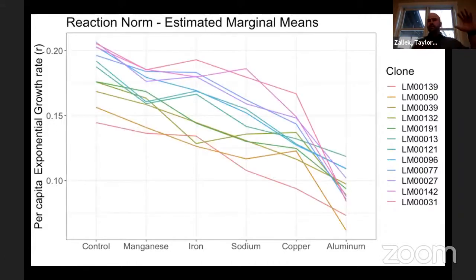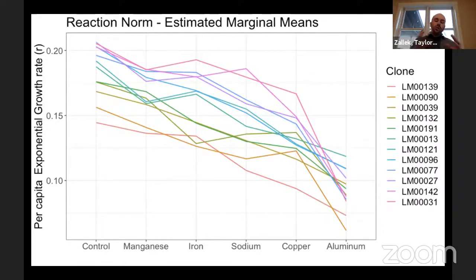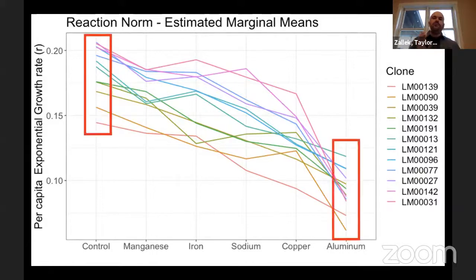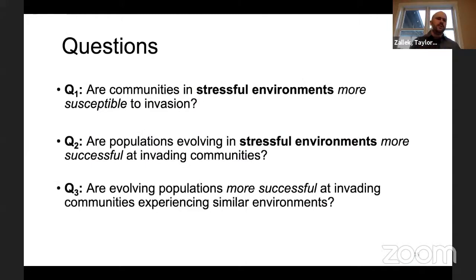What we see — and I know this looks like spaghetti — is differences in average response in growth rate to these different stressors and genetic variation with changes in rank order especially. I actually took these chemicals and put them out into the environment in our experimental setting to try to see if any of these evolved more invasive populations of Lemna minor. I'm going to focus today on comparing aluminum — which tends to have some really interesting results — to control. The central questions were: whether communities in stressful environments become more susceptible to invasions, whether populations evolving in stressful environments are more successful at invading communities regardless of invasion environment, or whether evolving populations become more successful at invading communities experiencing those similar environments — a local adaptation question.